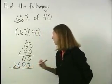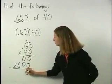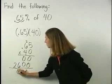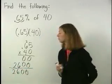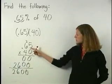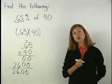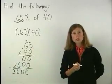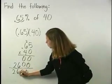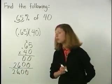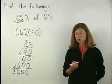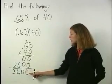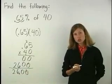Next, add the rows together. Finally, since there is a total of two digits to the right of the decimal point in our original numbers, there will be two digits to the right of the decimal point in our answer. So we have 26.00 or just 26. So 65% of 40 is 26.